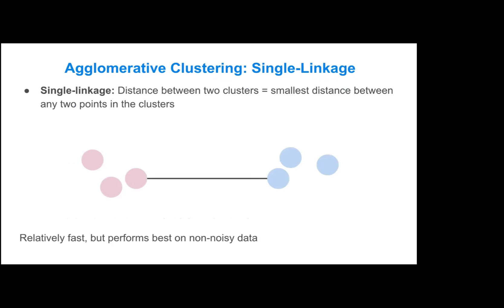The first linkage method is called single linkage. This is where the distance between two of these multi-object clusters is equivalent to the smallest or shortest distance between any of the two points in the clusters. This is very fast, but it performs the best on non-noisy data. If you have a lot of points that are all very close to each other, this is not going to be the best method for figuring out where the clustering divides should be.